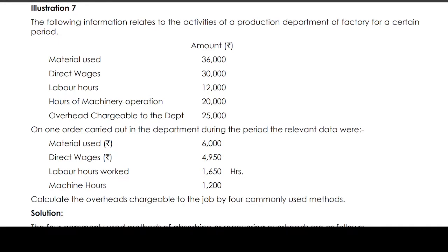The following information relates to the activities of the production department of a factory for a certain period. Materials used: 36,000 rupees; direct wages: 30,000 rupees; labor hours: 12,000 hours; hours of machinery operation: 20,000 hours; overhead chargeable to the department: 25,000 rupees. On one order carried out in the department during the period,